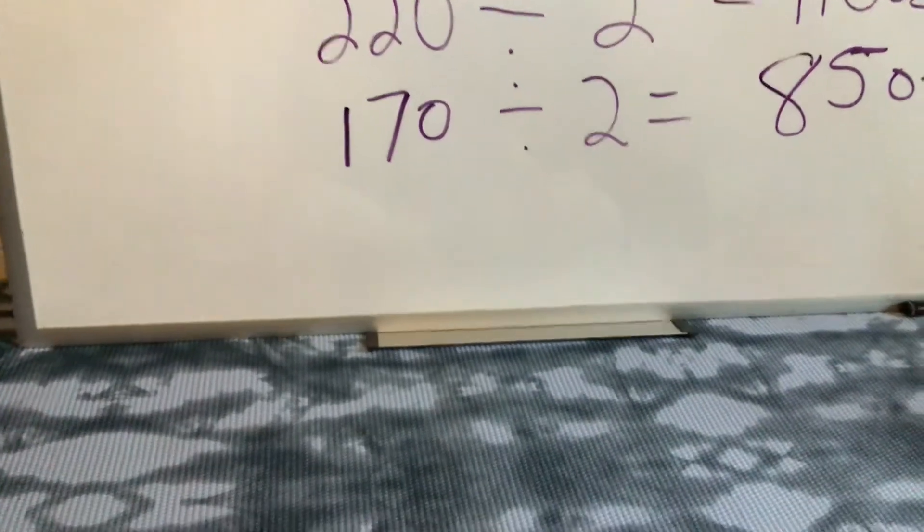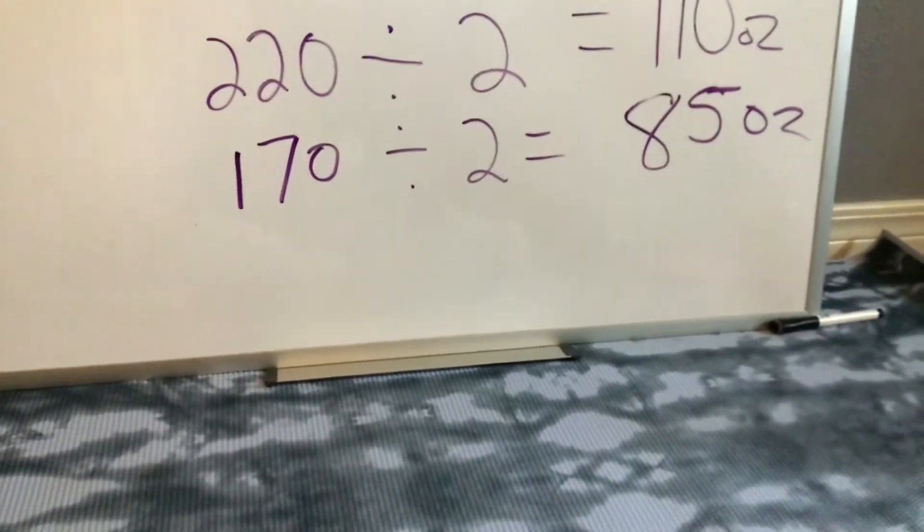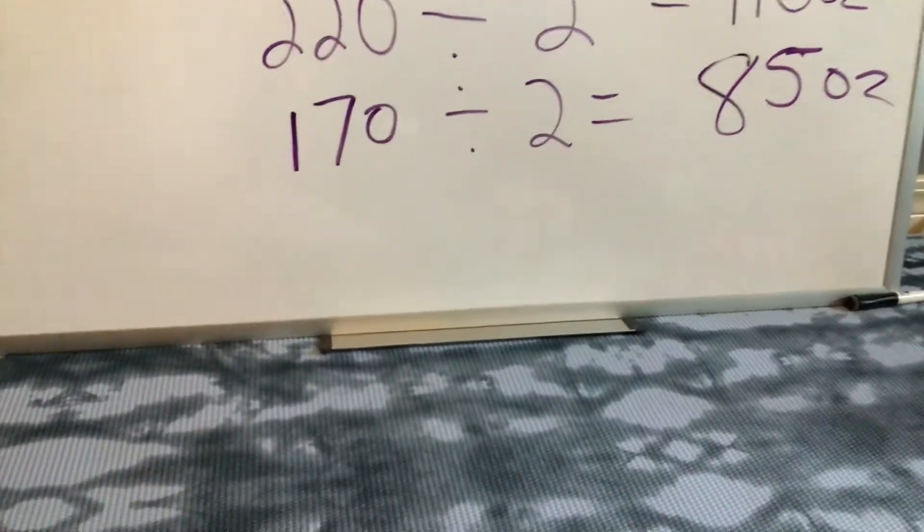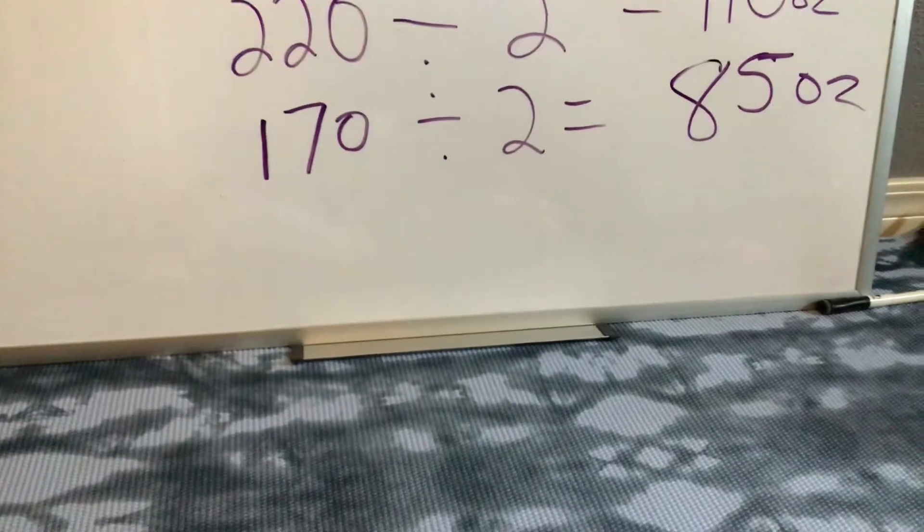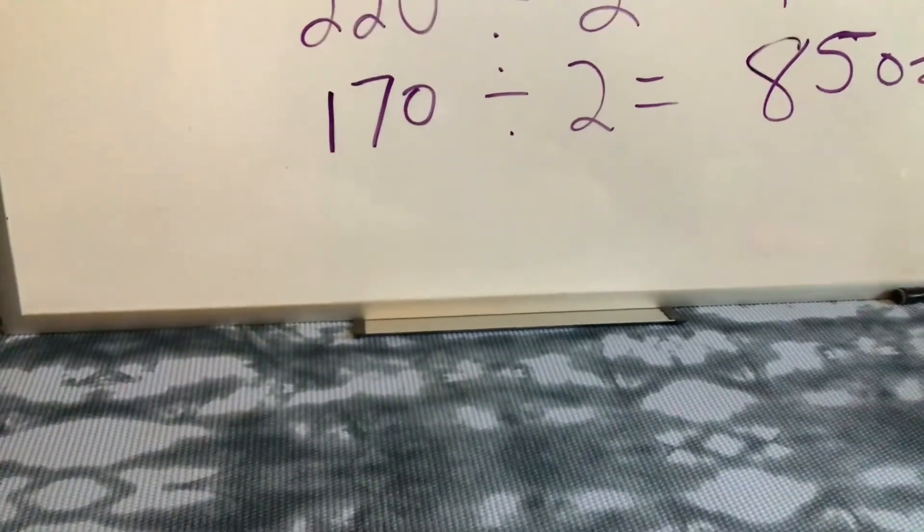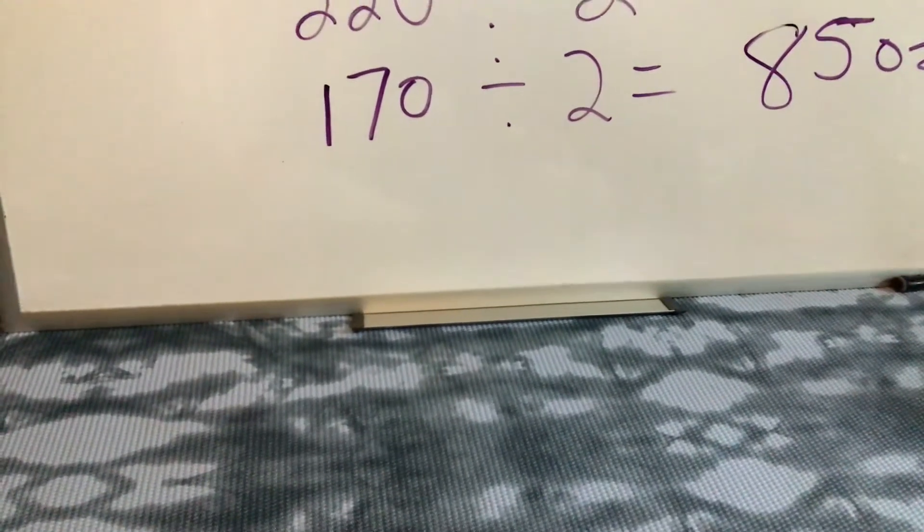But it looks like I don't need four per day anymore. So if I was gonna figure out how many cups I needed with 85 ounces—if I needed 85 ounces and I have a 32 ounce cup, I could divide that by 32. 85 divided by 32.